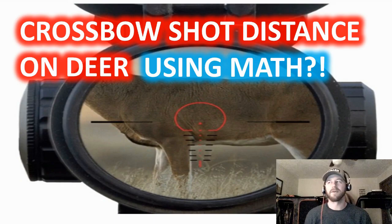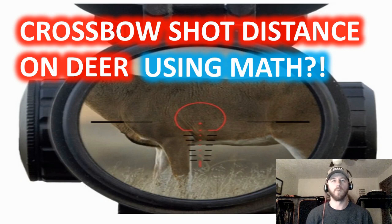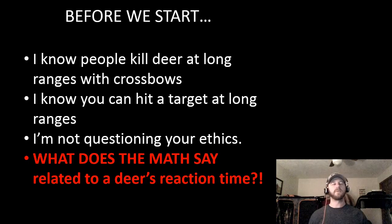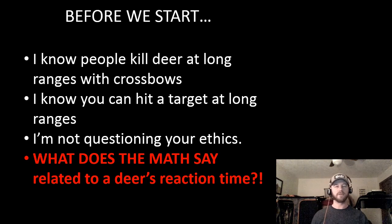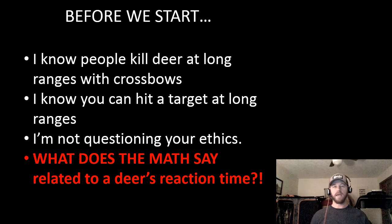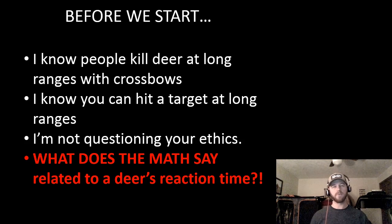Today's video is about crossbow shot distance on deer, looked at from a watered-down mathematical standpoint. Before we get started, I want to say that I know a lot of people — maybe including yourself — have successfully harvested deer at long ranges with a crossbow. I also know that we are capable of shooting accurate groups at long ranges at a stationary target. I'm not arguing that, and I'm not questioning anyone's ethics. The range at which you can ethically harvest deer is an individual decision.